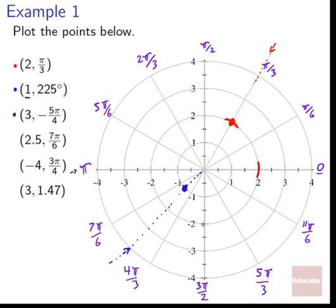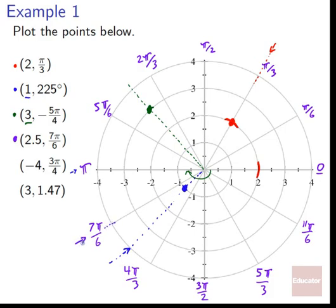Next point in green: 3 comma negative 5 pi over 4. If theta is negative, instead of going counterclockwise we go clockwise. Negative 5 pi over 4 puts us at the same angle as positive 3 pi over 4 going clockwise — that splits the arc sector in the middle. We're at a distance of 3, so we go out to the third circle and mark the point there.